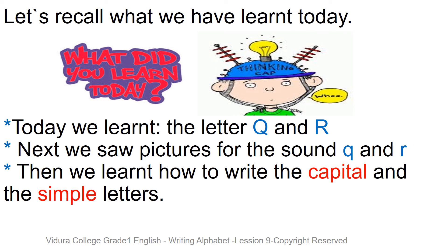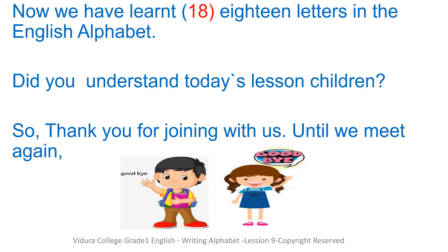Ok, children. Let's remind what we have learned today. Today we learned the letter Q and R. We saw pictures for the sounds Q and R. Then we learned how to write the capital and the simple letters. That's all for today's lesson. We have now learned 13 letters in the English alphabet. So can you tell me how many letters we have learned? We have learned 13 letters. Did you understand today's lesson, children? Yes, I hope so. Thank you for joining with us. Until we meet again, goodbye.